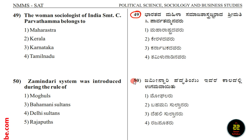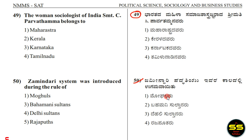The names covered include the Mughal, Bahamani Sultan, Dhali Sultan, and Rajaputar dynasties.